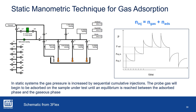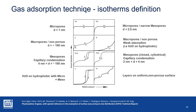IUPAC updated the original classification of isotherms, adding two types to the original six and classifying also the shape of the hysteresis loops, because in recent years several new materials have been developed presenting intermediate characteristics. Today IUPAC recognizes eight types of adsorption isotherms and six types of hysteresis loops. Catalysts usually are made of supports mainly showing micro and mesopores or non-porous particle systems, so we will focus our attention on isotherm types 1, 2, and 4.